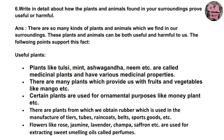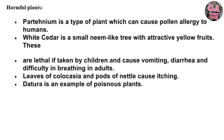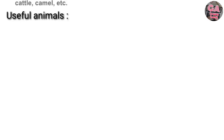Flowers like rose, jasmine, lavender, champa, saffron, etc. are used for extracting sweet-smelling oils and perfumes. Harmful plants: Parthenium is a plant that can cause pollen allergy to humans. White cedar is a small neem-like tree with attractive yellow fruits that are lethal if taken by children and cause vomiting, diarrhea, and difficulty in breathing in adults. Leaves of clocaceae and pores of nettle cause itching. Datura is an example of a poisonous plant.